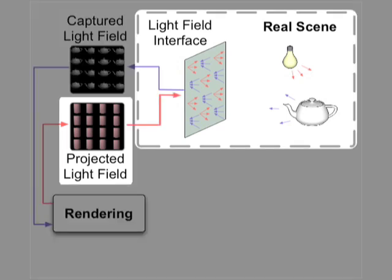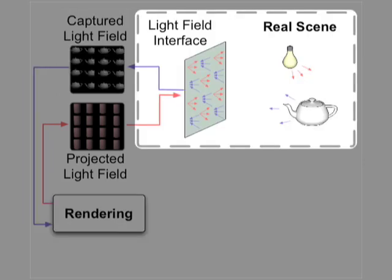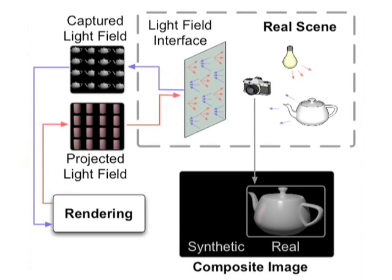Now the real scene is illuminated both by direct lighting and by the light field interface, which contributes near field illumination from the synthetic scene. Similarly, the synthetic scene is illuminated by direct lighting and also by the captured light field, which contributes near field lighting from the real scene. We can iterate this process for multiple bounces of global illumination, and then create the final result by capturing and rendering the relit scenes and compositing.